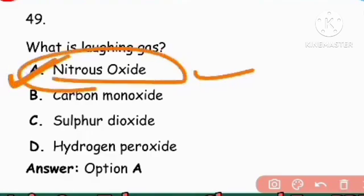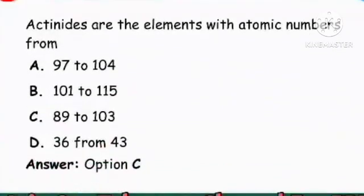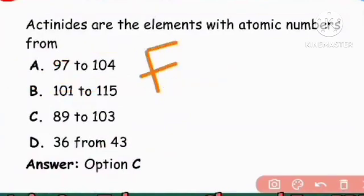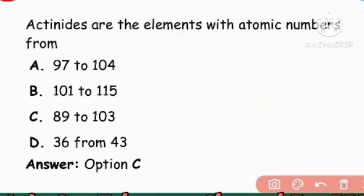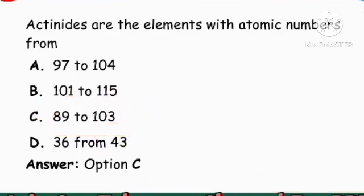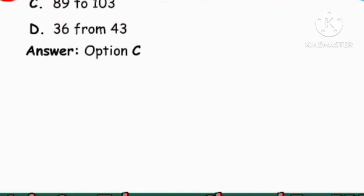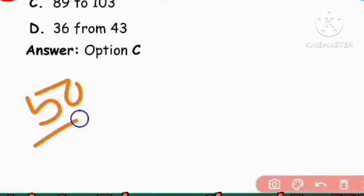Next question: Actinides are the elements with atomic numbers 89 to 103 (f-block elements). The actinide series is the right answer — option C. That covers all the important chemistry questions in this video.